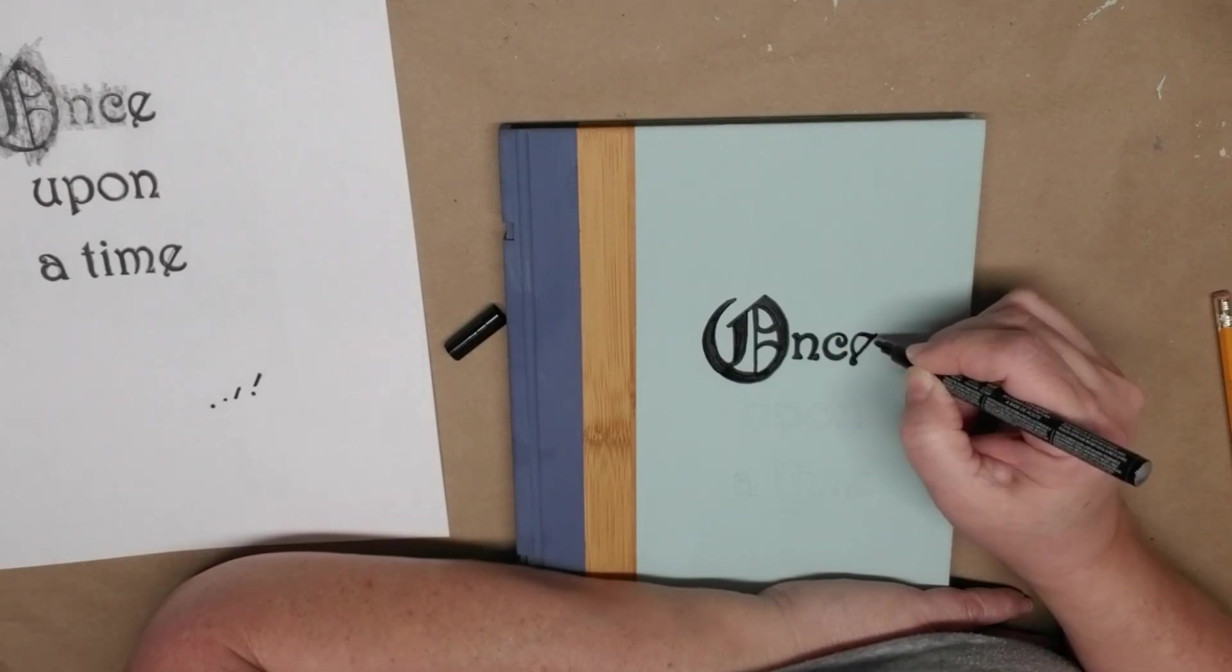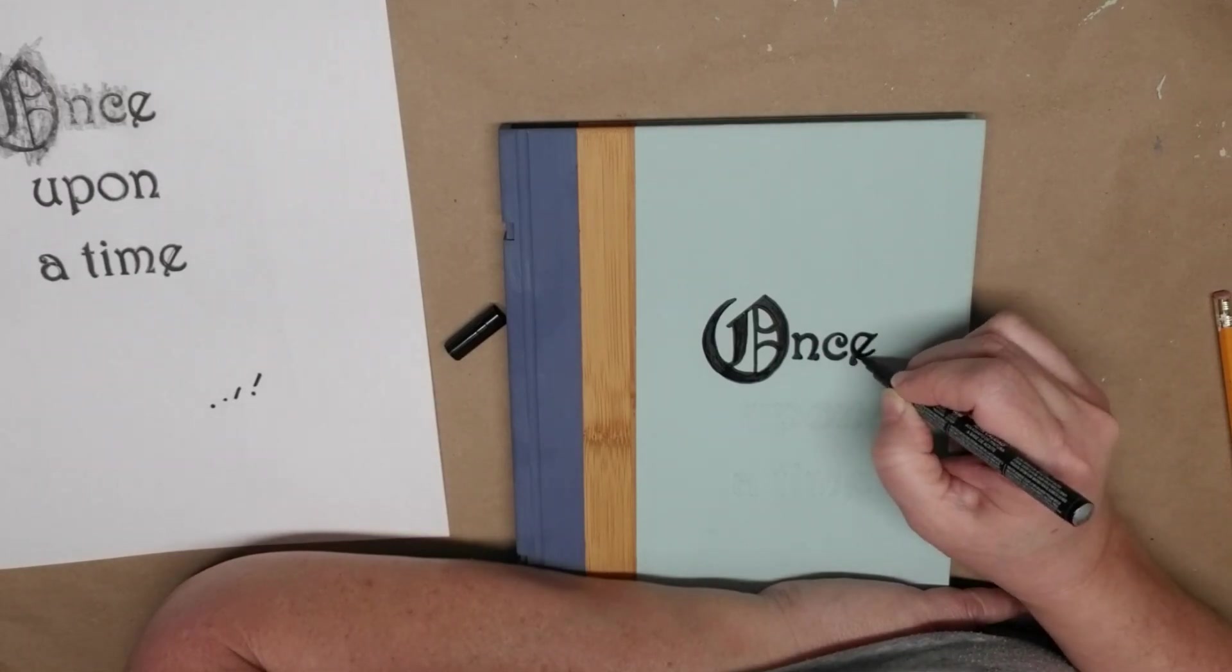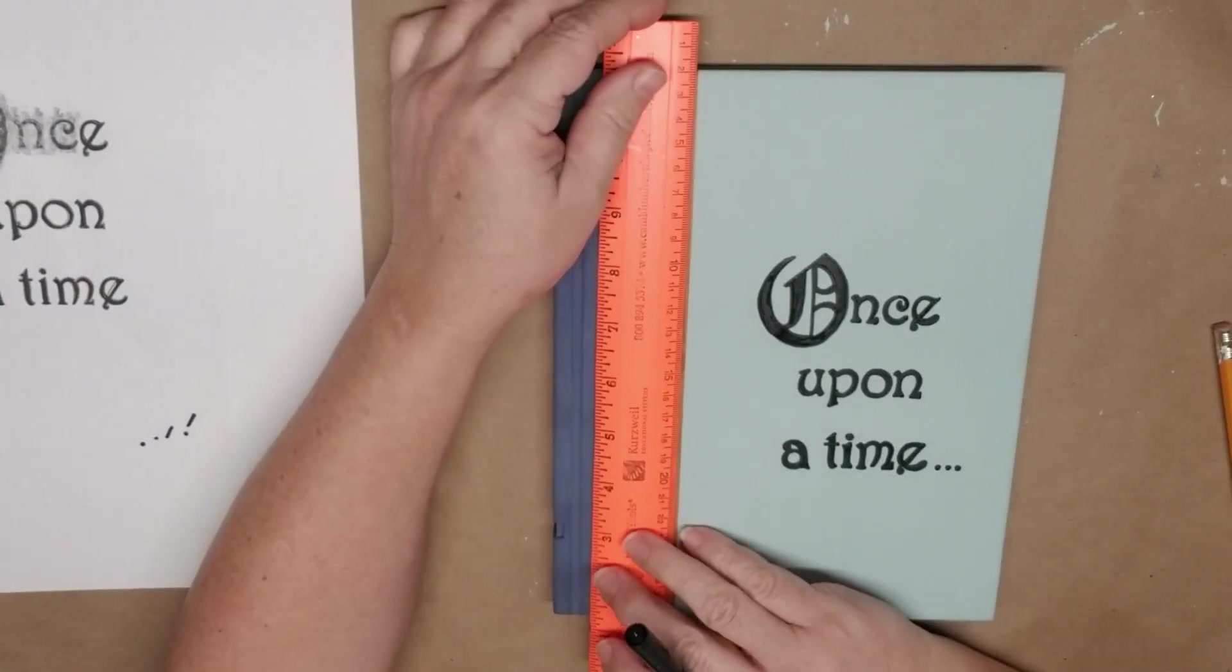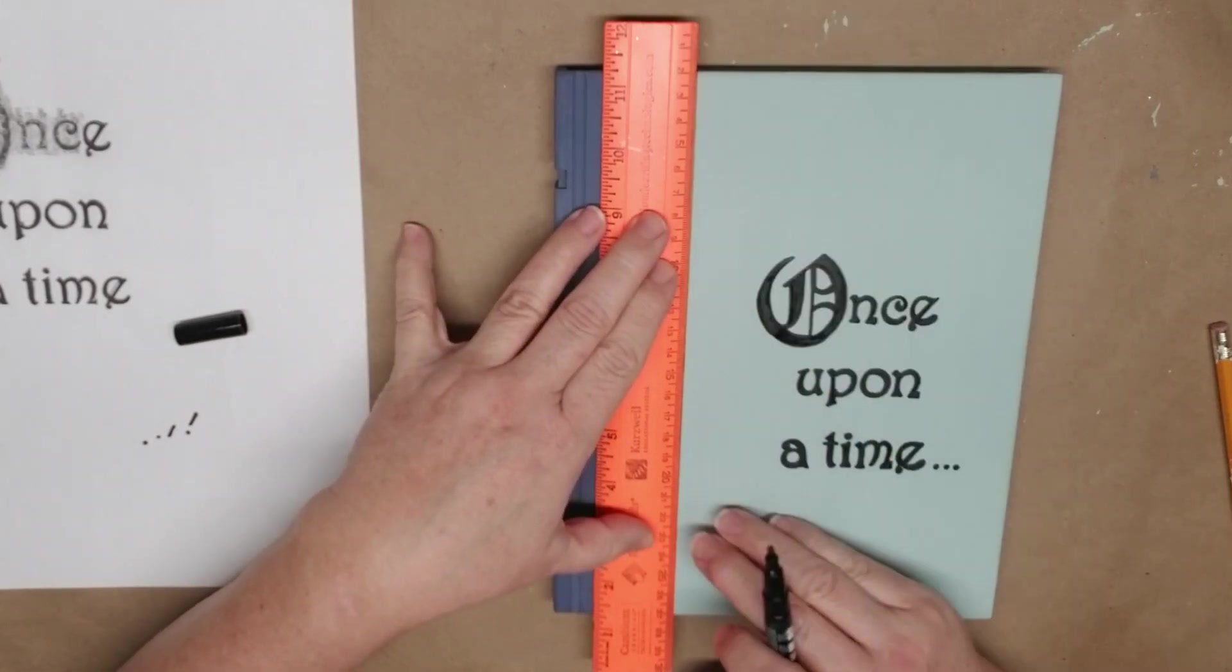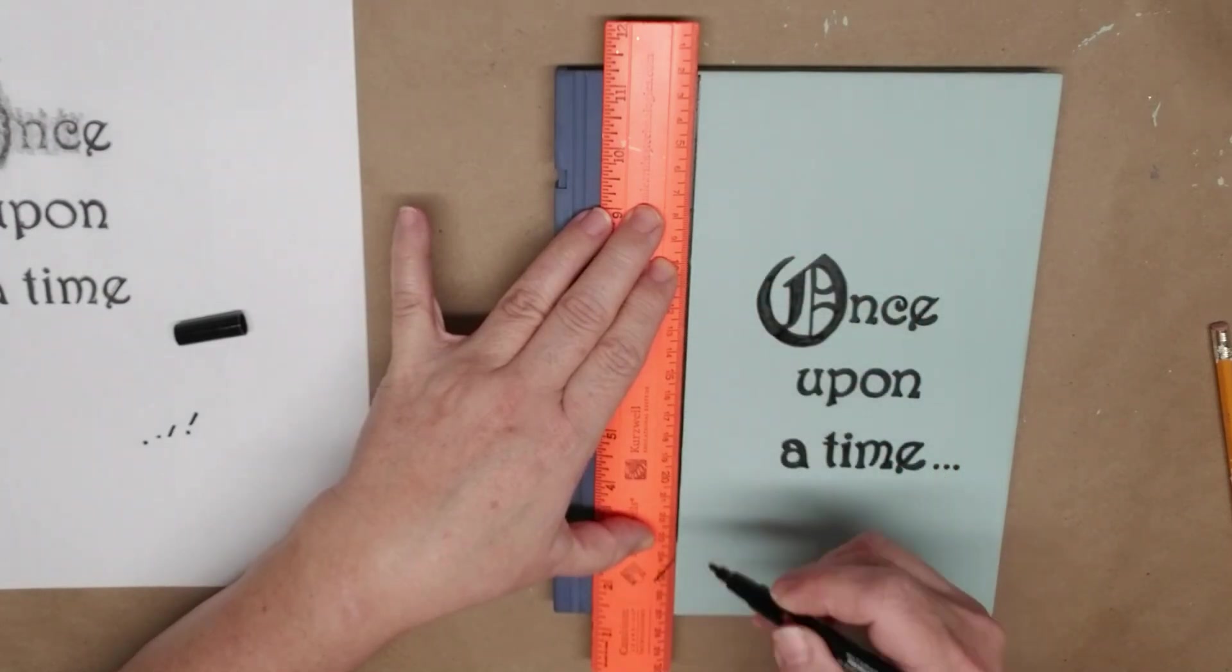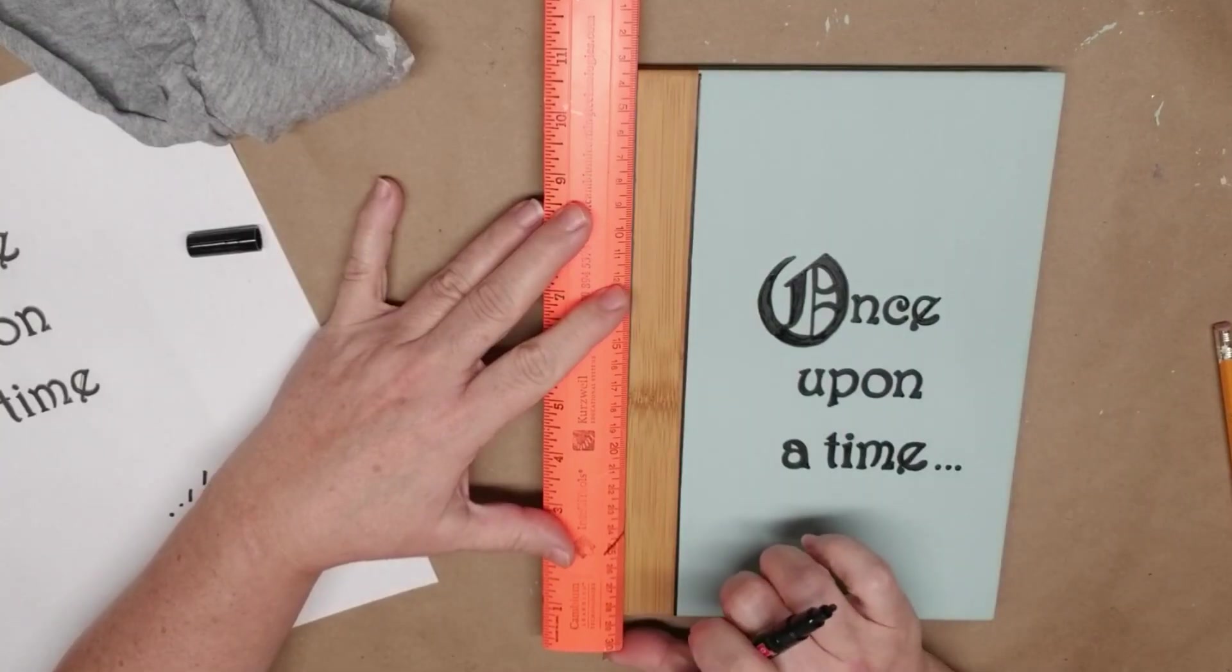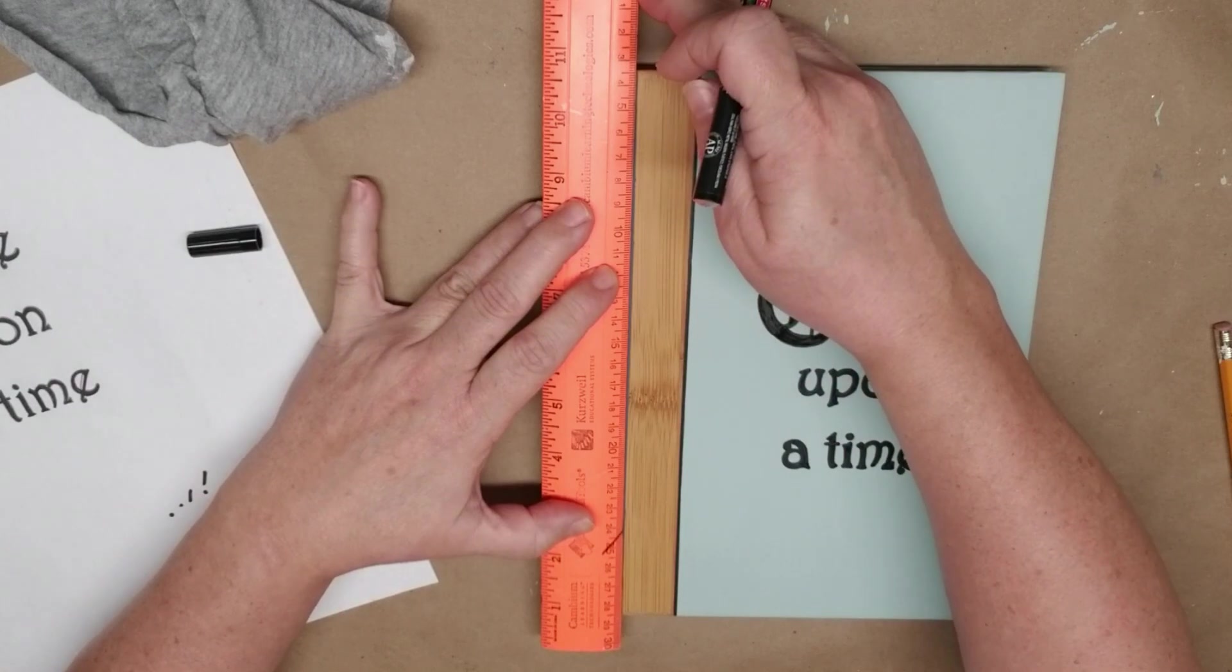Here's the finished lettering and I just added three little dots at the end of it because then that means that a story is coming. What I'm going to do now is just take a ruler and I'm going to just outline where the paint meets the brown part of the book. This will give the paint edges more of a finished look.